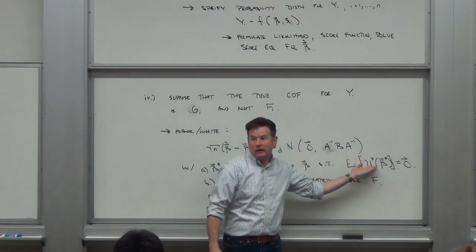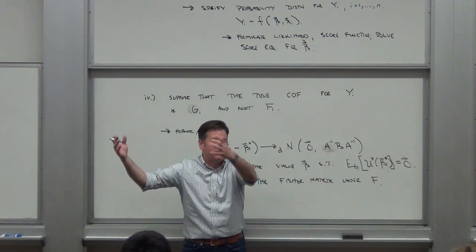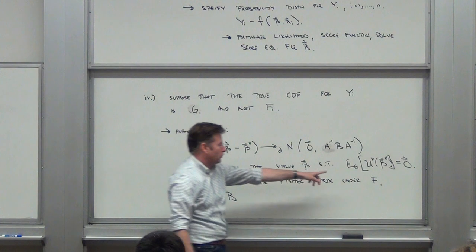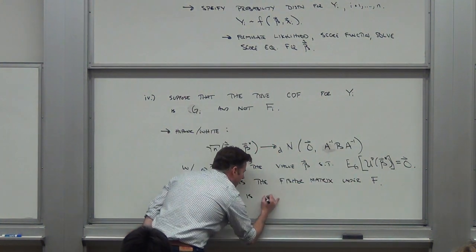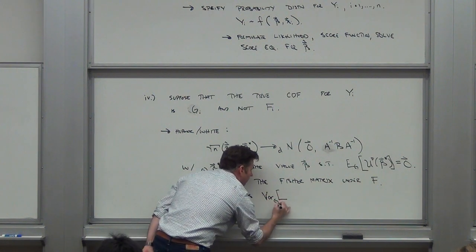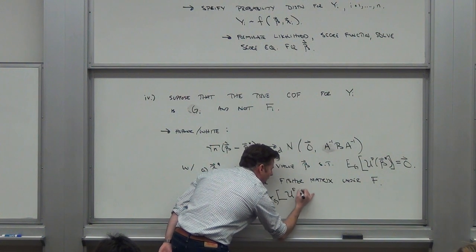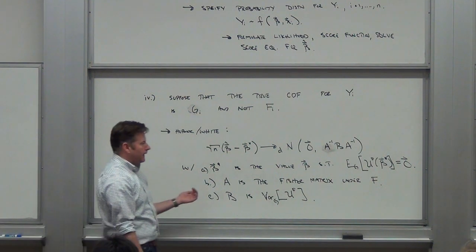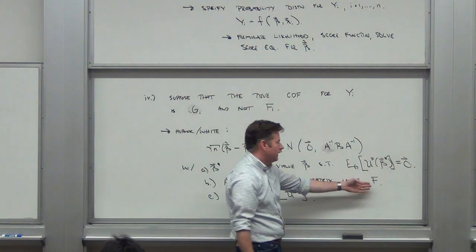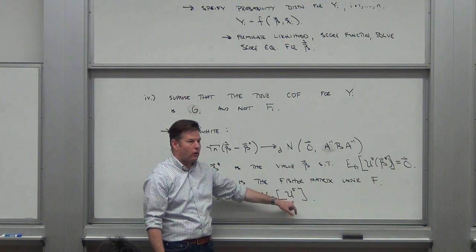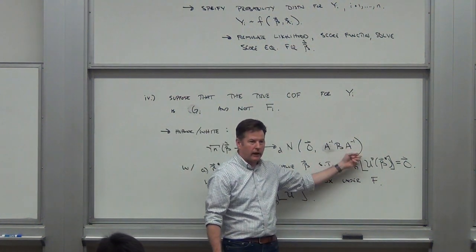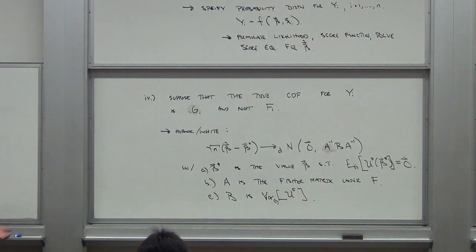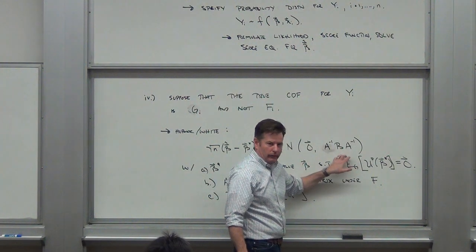So u — the estimating function — is just what I had when I assumed F. Capital B is the variance of that estimating function under the true distribution G. We know that if we had specified F correctly, the variance of the score equals the Fisher information, so B and A-inverse cancel out and we get back to the standard MLE result: the Fisher information inverse. That's what we showed last time — but this is the reality when dealing with real-world data.